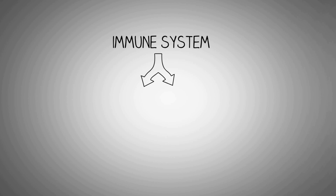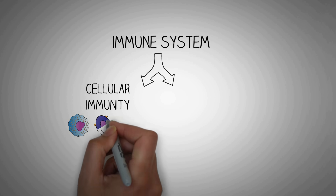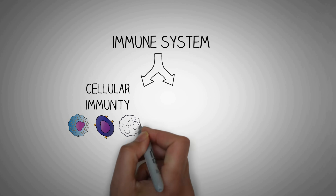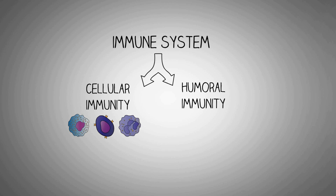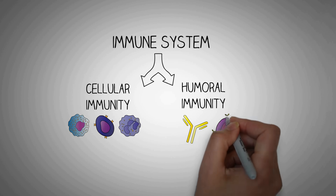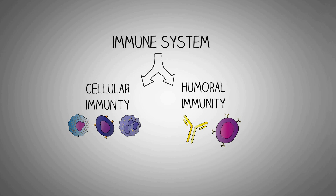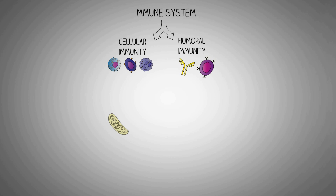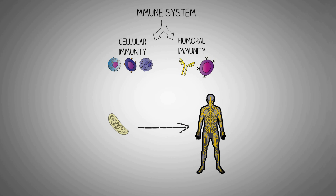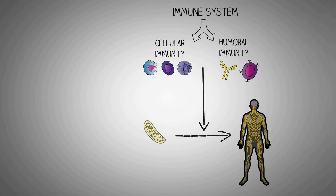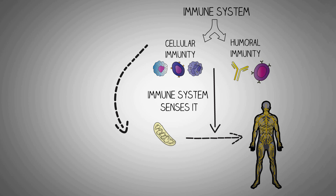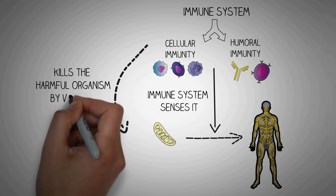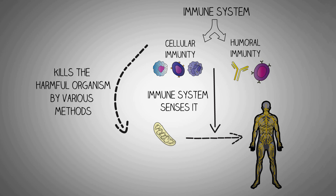Our immune system consists mainly of two types of immunity: the cellular immunity, which consists of the different types of cells, and the humoral immunity, which consists of the antibodies and the cells producing them. Whenever a harmful organism enters our body, our immune system is able to sense it and destroys it by different mechanisms. This is known as the sensitivity of our immune system.